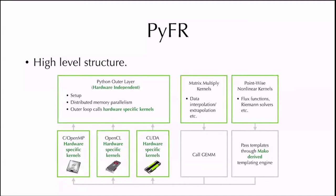What makes PyFR somewhat unique is summarized in this diagram. Python is predominantly used for the setup portion of the code — things like reading in your configuration file, reading in the mesh, memory allocation, all of these boilerplate tasks that Python does a fantastic job at handling. Looking at the flux reconstruction algorithm itself, the operations required in a flux reconstruction time step really boil down to two separate classes of operations. The first take the form of matrix multiplication kernels responsible for shuffling data around inside of an element and taking linear combinations of that data. The second are what I'm terming pointwise nonlinear kernels — things such as your flux functions, your Riemann solvers — the kernels that really encode the physics.